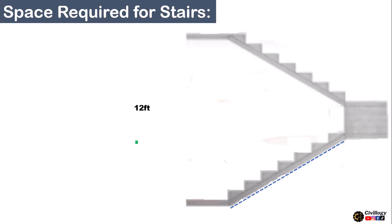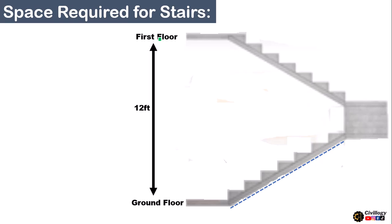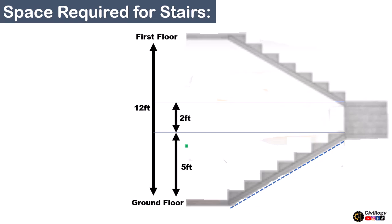As you can see here, this is the section of a staircase. Let's suppose this is ground level and this is first floor level. We are trying to reach from ground floor to first floor, and the height between ground floor and first floor is 12 feet. Let's suppose the height of the first landing is 5 feet and the height of the second landing is 2 feet. The distance between the first and second landing is the landing portion of the staircase. You can change these dimensions as per your requirements.